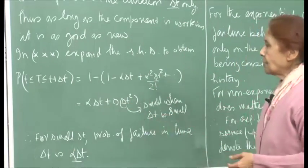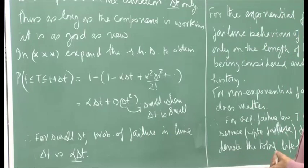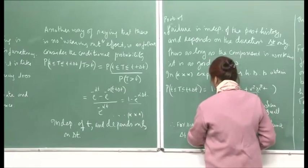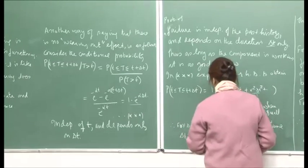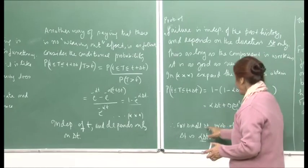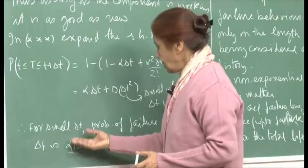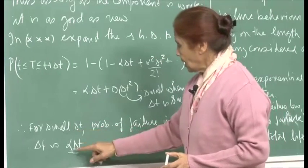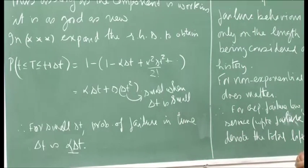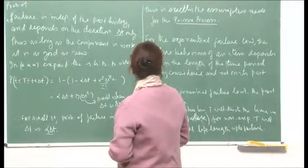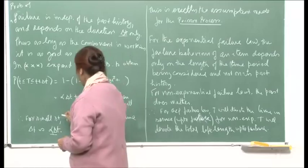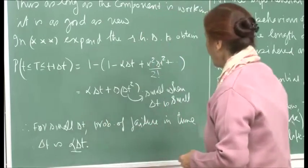This is again reiterating what we have been saying. In fact, we have given it a better expression from here. In a small interval, no matter where that time interval is, its length delta T is such that the probability of failure in that time period is proportional to delta T itself. This is nothing but your Poisson process — this is one of the basic assumptions of a Poisson process.